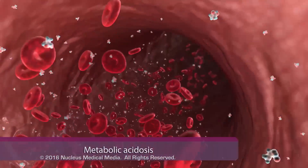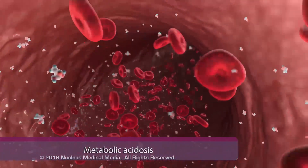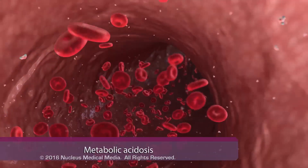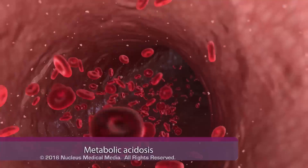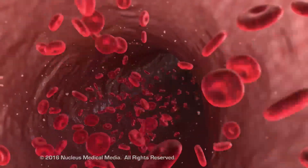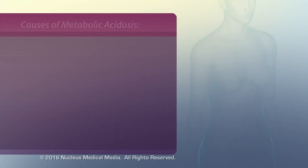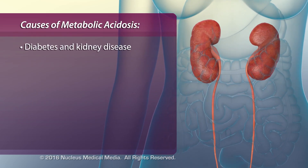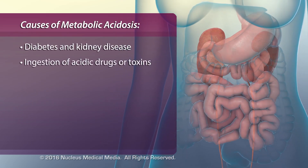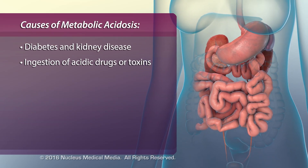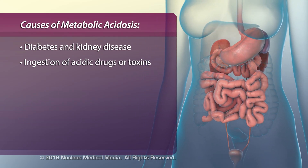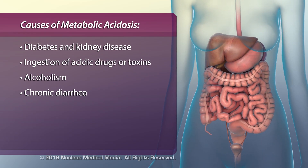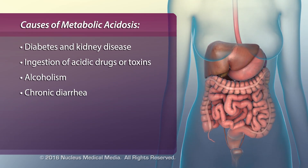Metabolic acidosis occurs when metabolic disorders allow certain acids to build up or cause the loss of basic buffers, such as bicarbonate. Conditions causing metabolic acidosis can include diabetes and kidney disease, ingestion of acidic drugs such as aspirin or toxins, alcoholism, and chronic diarrhea, resulting in significant bicarbonate loss.